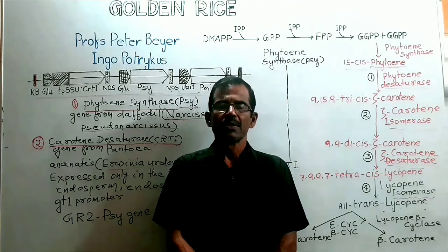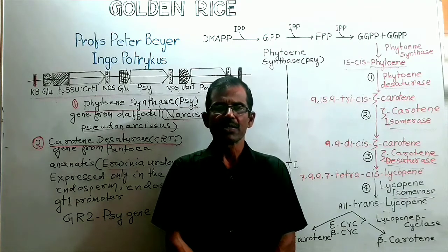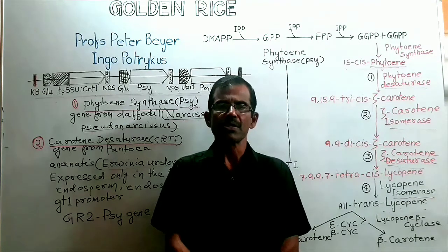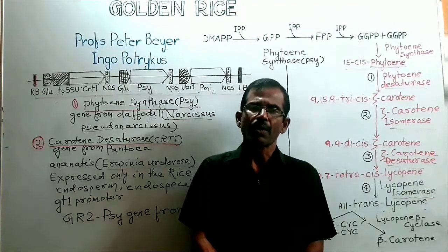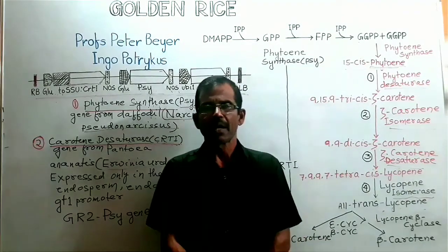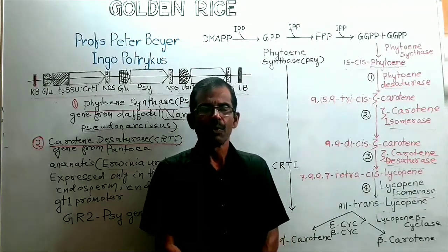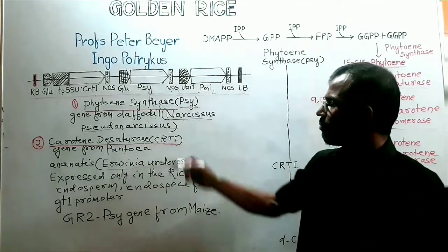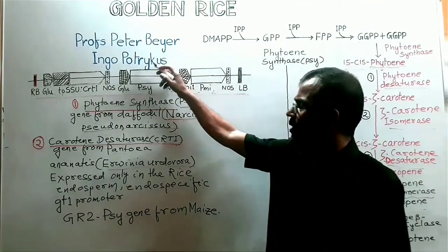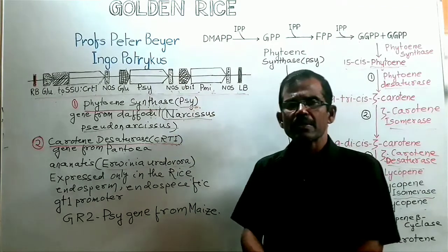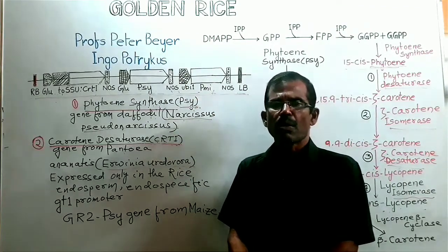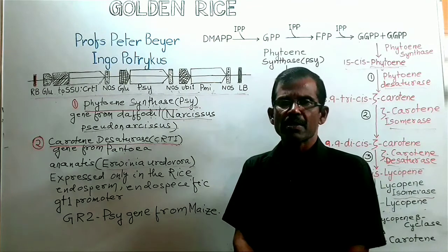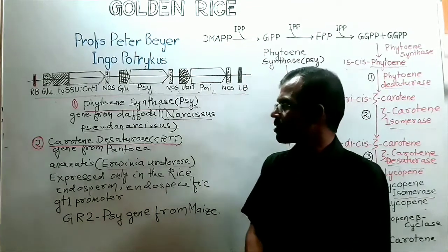This is because some of the genes which are responsible for the synthesis of beta-carotene are not expressed in rice endosperm. Golden rice is a transgenic crop that was invented by professors Peter Beyer and Ingo Potrykus. And golden rice project was the result of an initiative by Rockefeller Foundation.